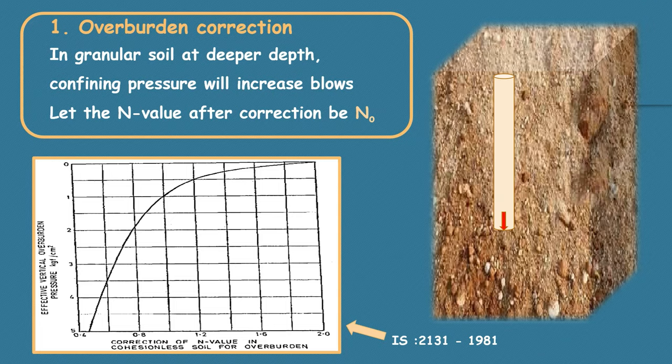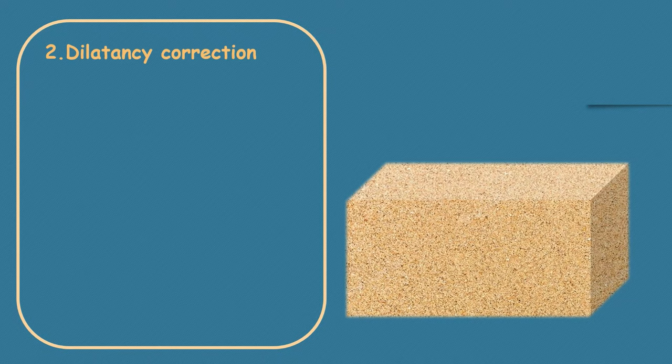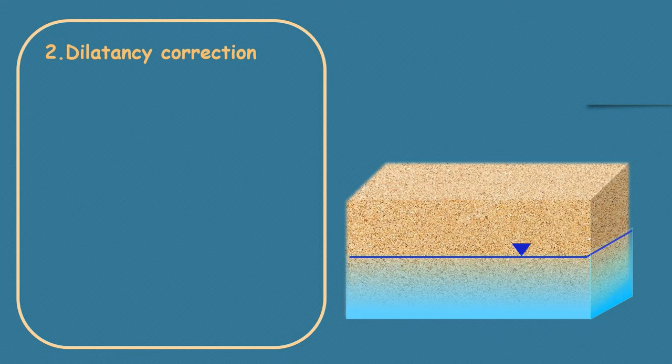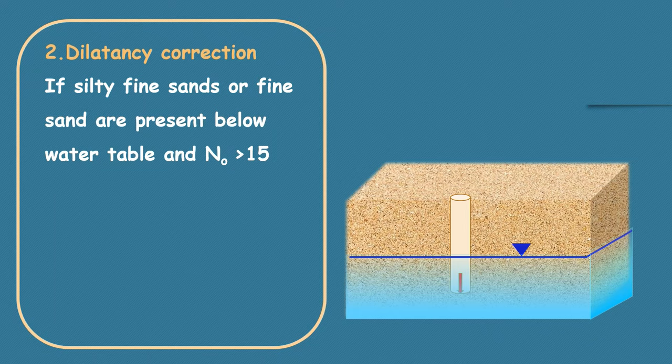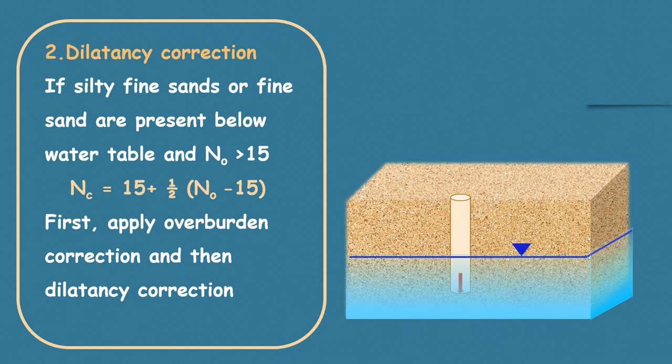The next correction to be applied is dilatancy correction. If silty fine sands or fine sands are present below water table and n value after applying overburden correction is greater than 15, then the corrected n value is given as NC equals 15 plus half of n naught minus 15. It is to be noted here that overburden correction has to be applied first and then the dilatancy correction is done.